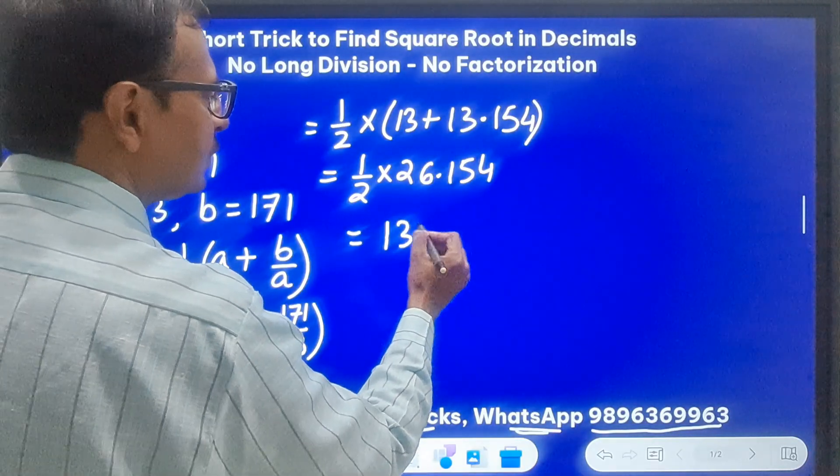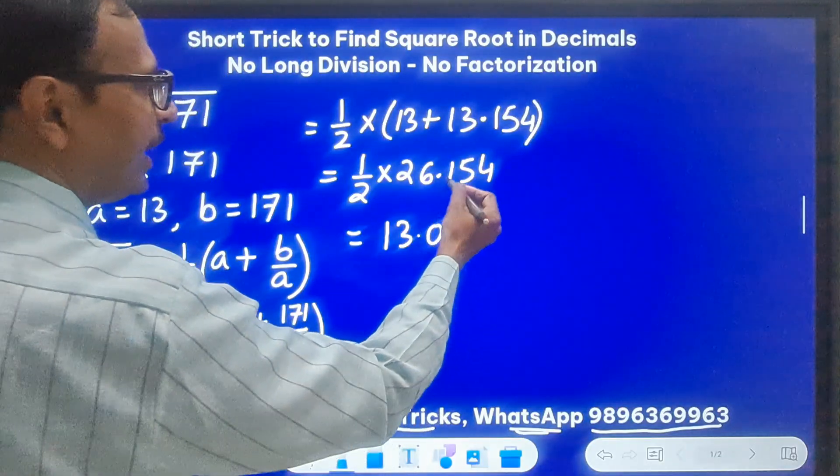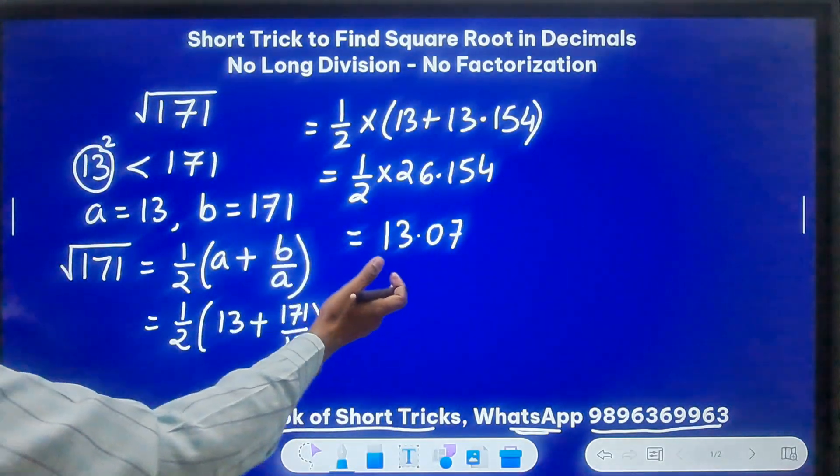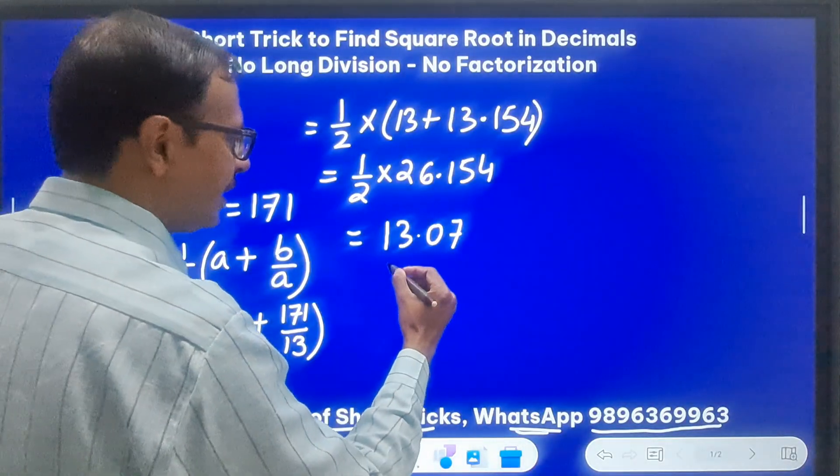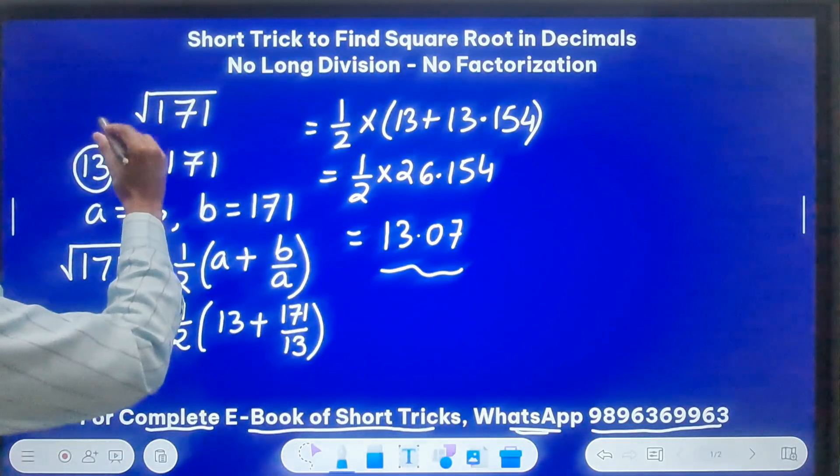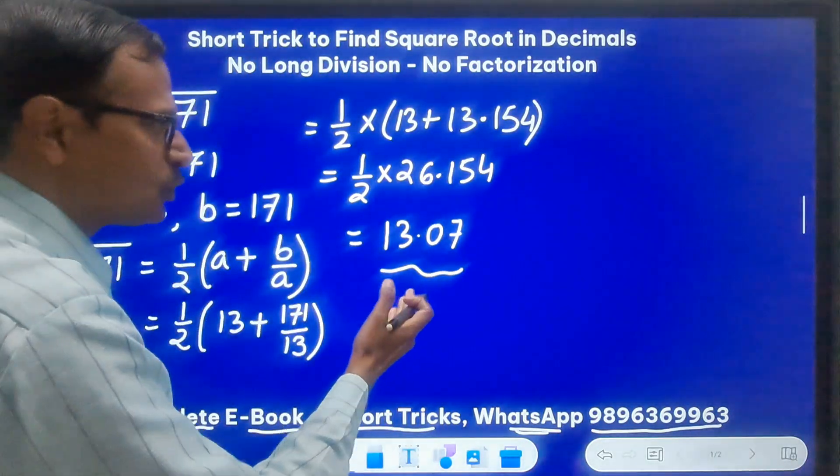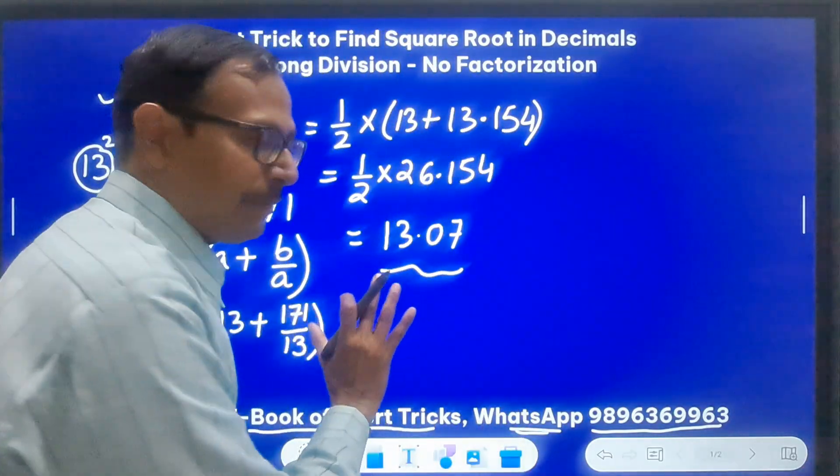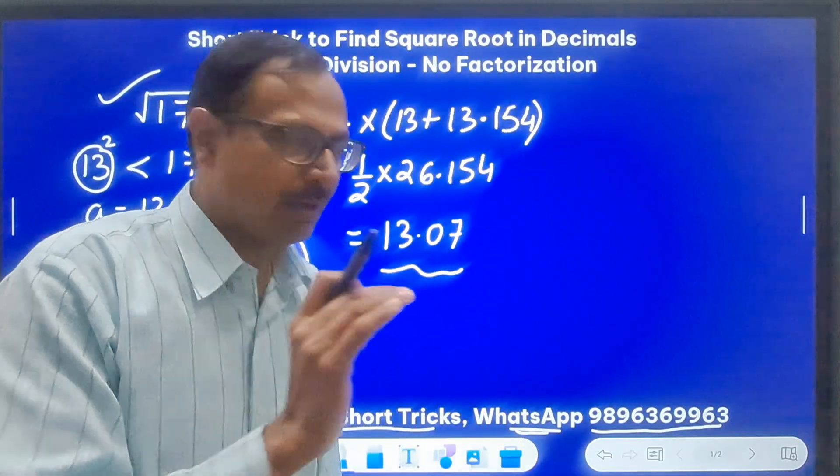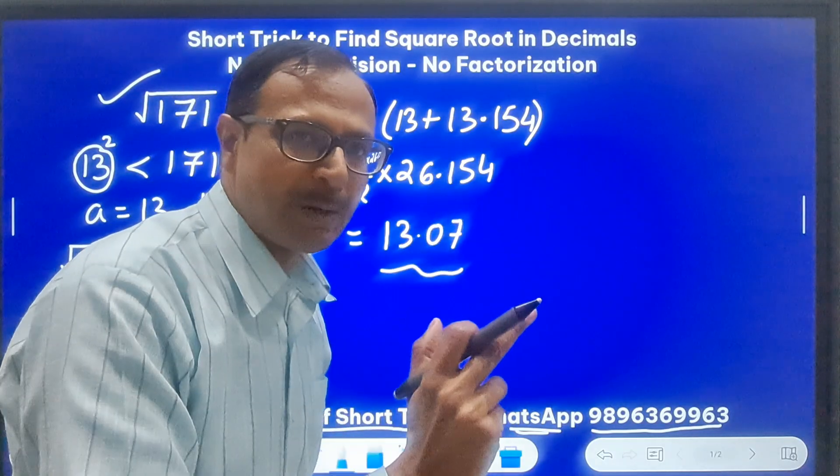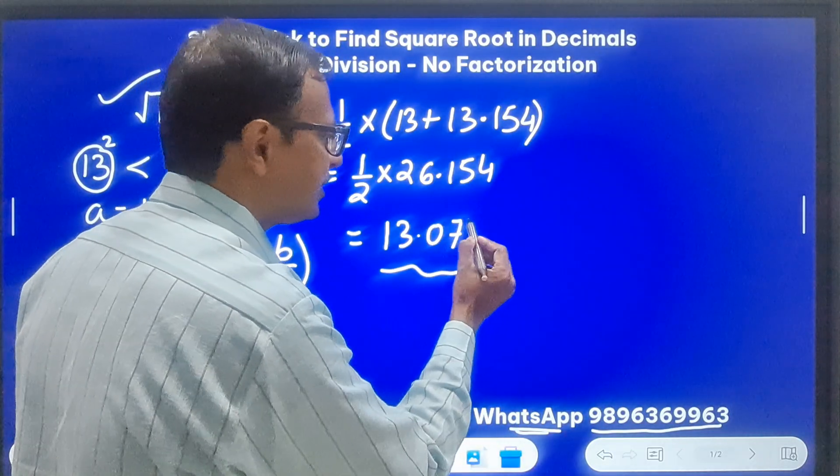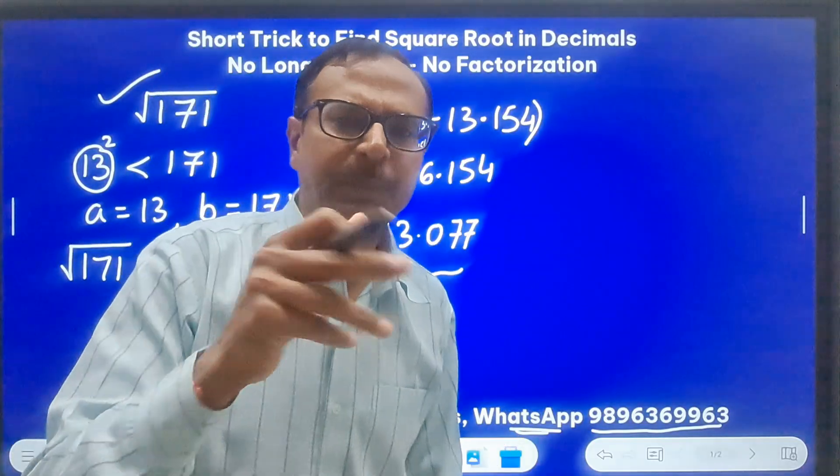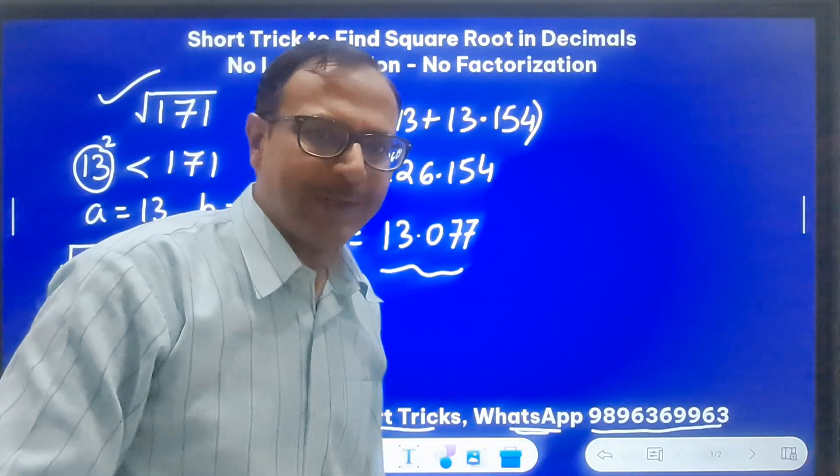So we get half of 26.154, and if you take half of this it will be 13 point something, right? 1 doesn't go into 2, so it is 0 and then 7, 7. So 13.07. That should be the square root of 171. Now you can check using the calculator. I'll tell you that you will get a very accurate answer if you take only two decimal places. I think the third digit is 7. So you can round it off and check your answer and let me know in the comments whether this worked or not.